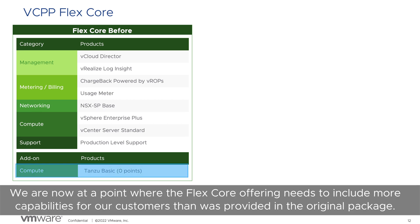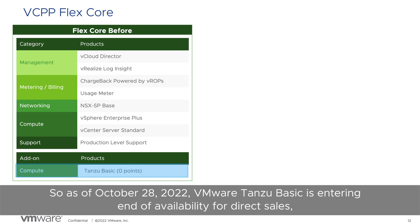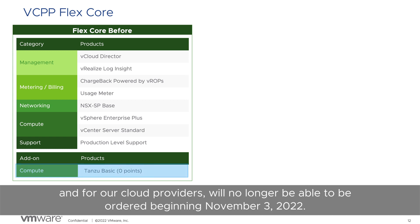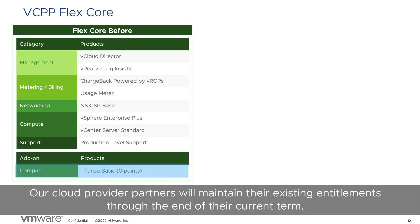We're now at a point where the FlexCore offering needs to include more capabilities for our customers than was provided in the original package. So as of October 28, 2022, VMware Tanzu Basic is entering end of availability for direct sales, and for our cloud providers will no longer be able to be ordered beginning November 3, 2022. Our cloud provider partners will maintain their existing entitlements through the end of their current term.